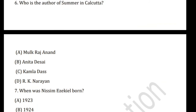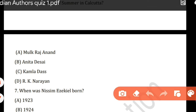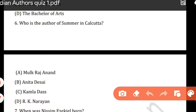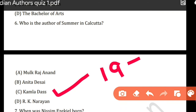The next question is: who is the author of 'Summer in Calcutta'? Maybe some of you have read this poetry collection. Can you tell me who wrote 'Summer in Calcutta'? I hope many of you can answer this. 'Summer in Calcutta' is written by Kamala Das. It is a title piece of her anthology of poems, published in 1965.